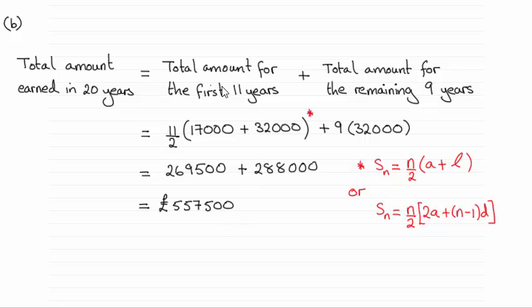So I've broken this down into two parts. We've got the total amount for the first 11 years, where her salary goes up by £1,500 each year as an arithmetic series. And then to this, there's going to be a remaining nine years. So for the remaining nine years, each year she has a salary of £32,000, so it's going to be a total then of nine lots of £32,000.